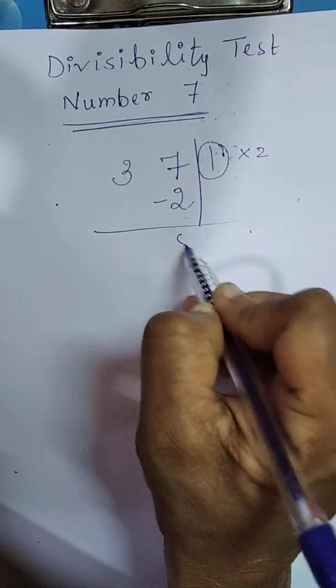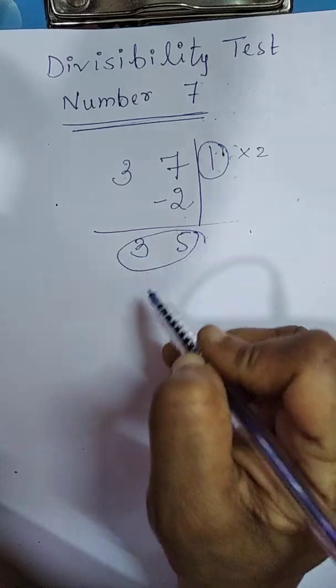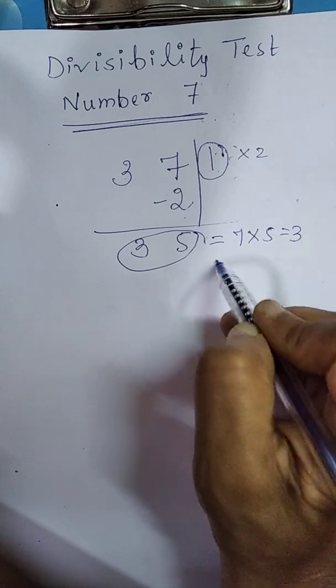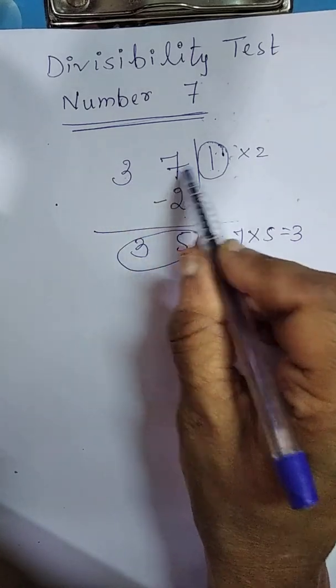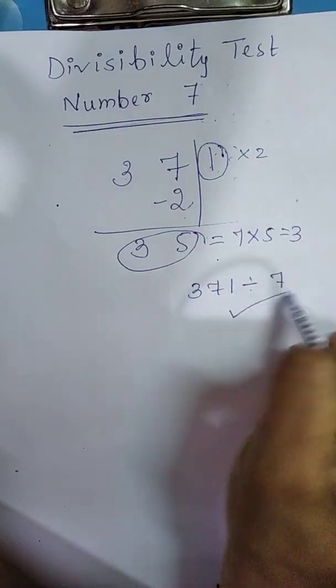Now, subtract it. 7 minus 2 is 5, 3. Now, 35. We know tables. That is, 7 times 5 is 35. Is it divisible by 7? Yes. The number 371 is divisible by 7.